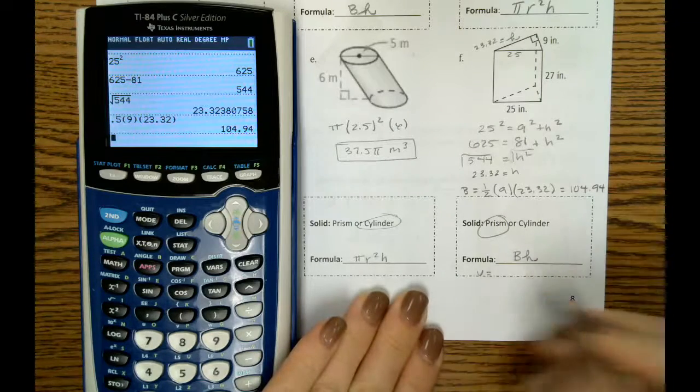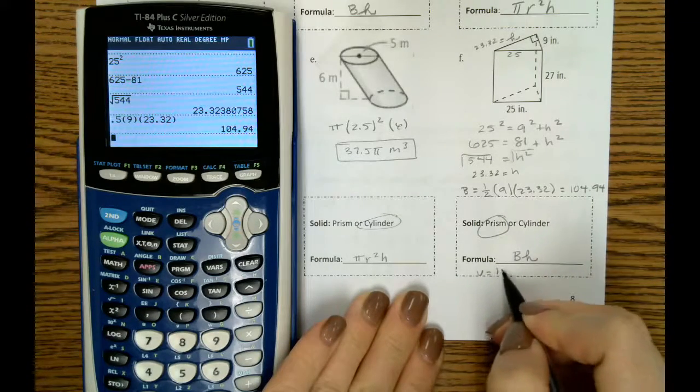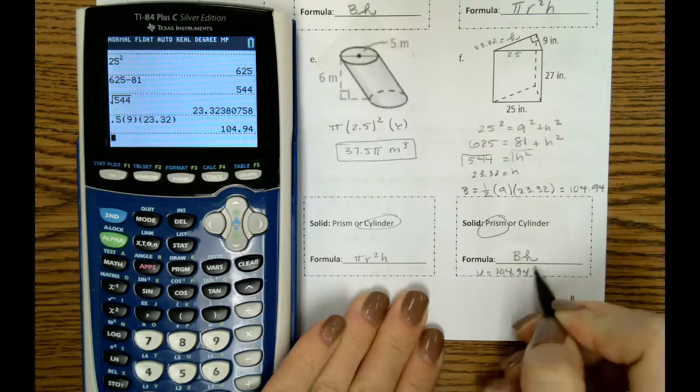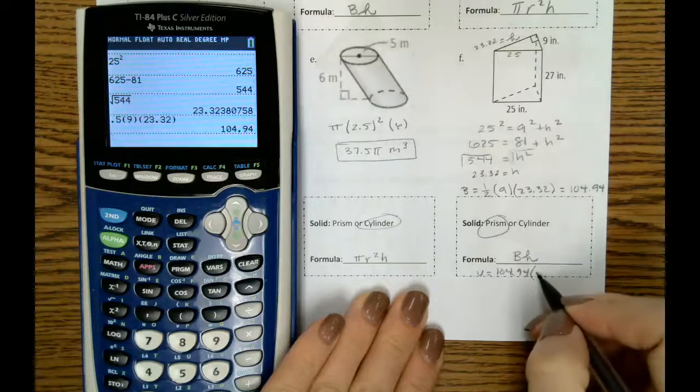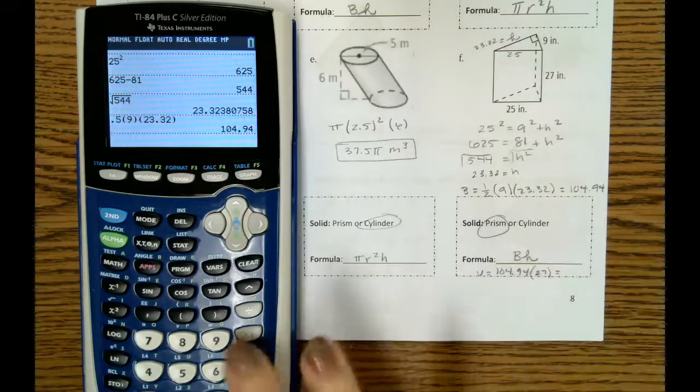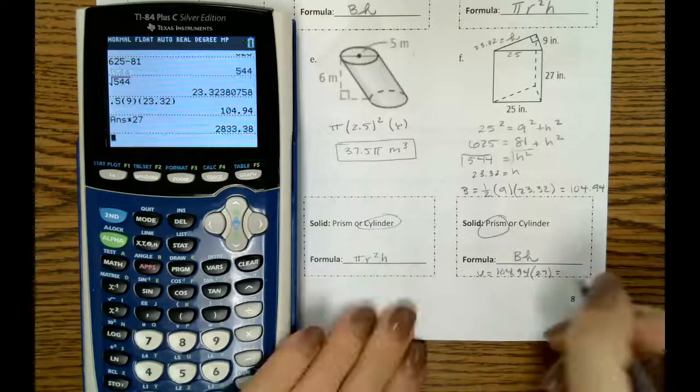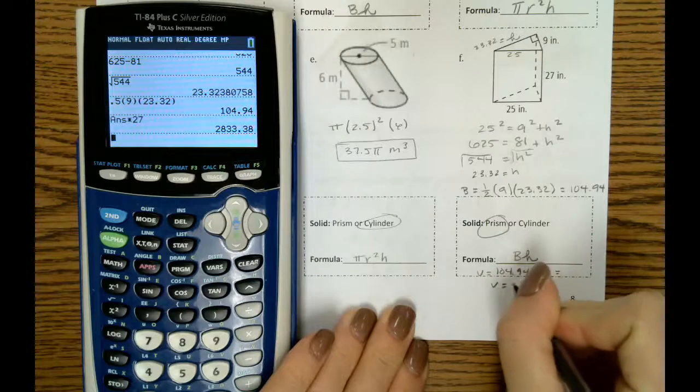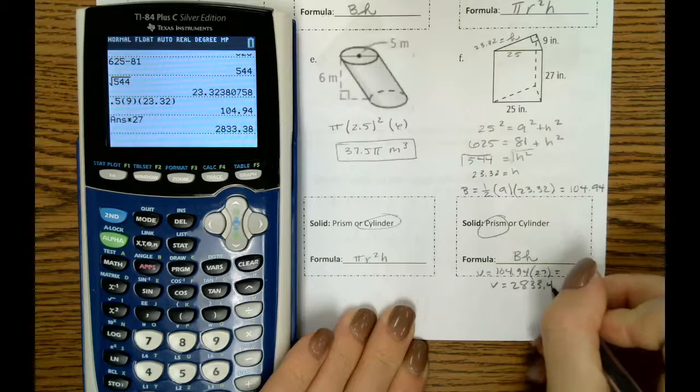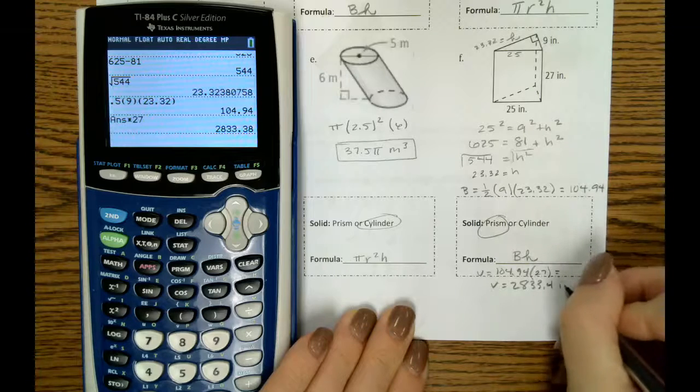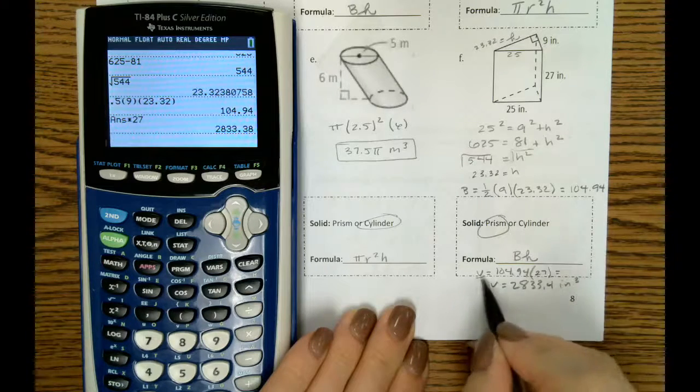Then I'm going to come down here to do my volume. So our area of our base is the 104.94. The height of our entire prism is 27. So that would get us a total volume of 2,833.4 cubic inches.